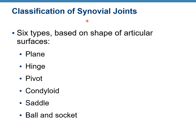Synovial joints can be divided into six types based on the shape of articular surfaces: plane, hinge, pivot, condyloid, saddle, and ball-and-socket.